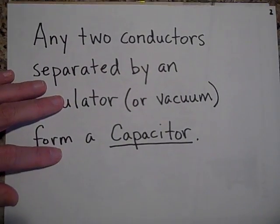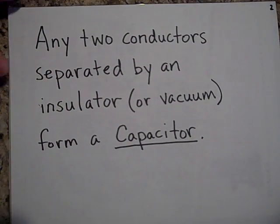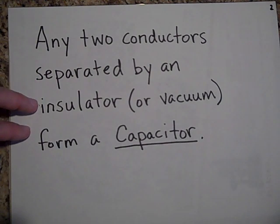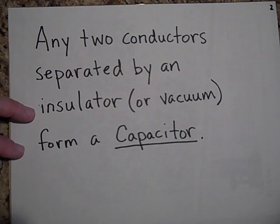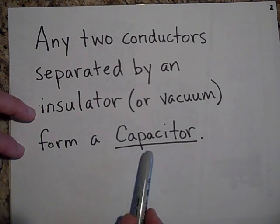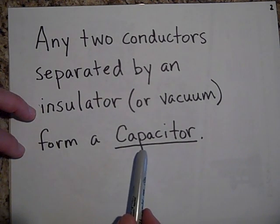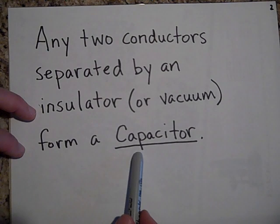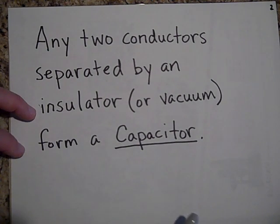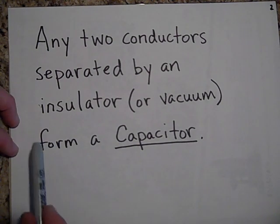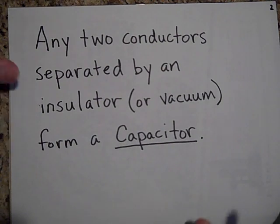Okay, a capacitor is any two conductors that are separated by an insulator. The insulator could even just be a vacuum. They form a capacitor. So whenever you have a conductor and then an insulator and then another conductor and the charge isn't allowed to go from the one to the other, we say we have a capacitor.